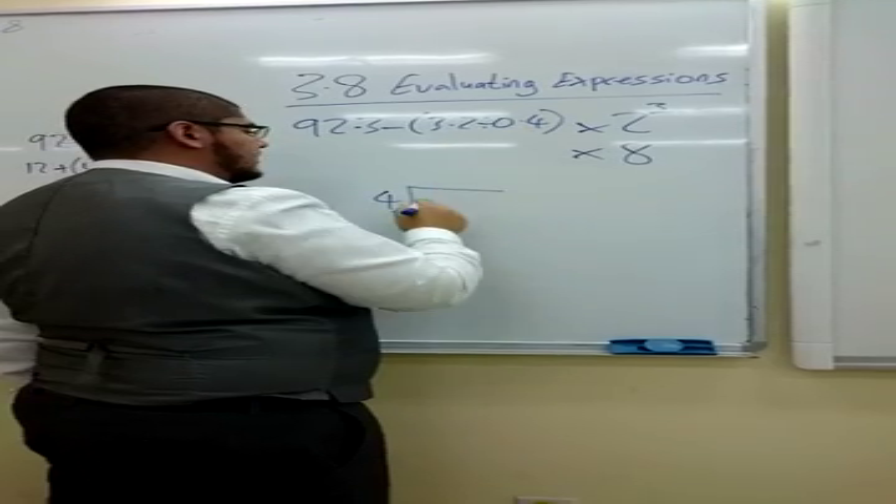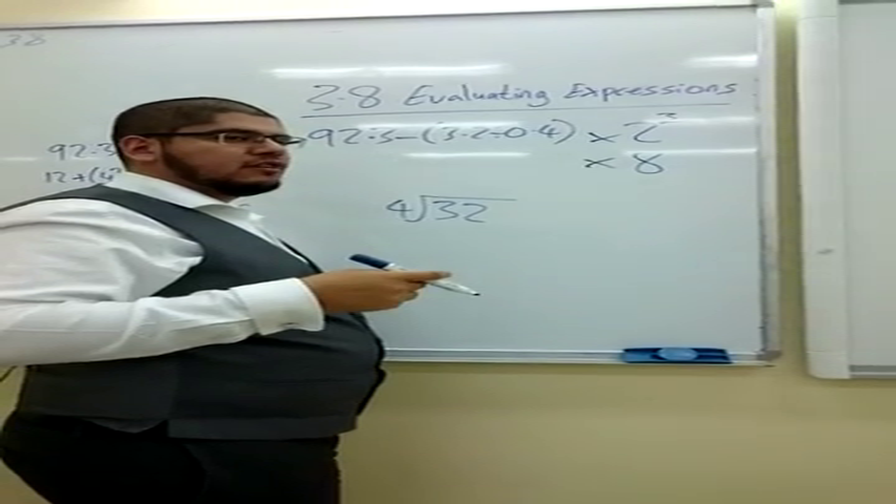3.2 divided by 0.4. As we just talked about in 3.7 and 3.6, we need to make this a whole number. Multiply this by the power of 10, and the same on this side. After multiplying both sides by 10, it will become 32 divided by 4. And using mental math, you should know that it's already 8.